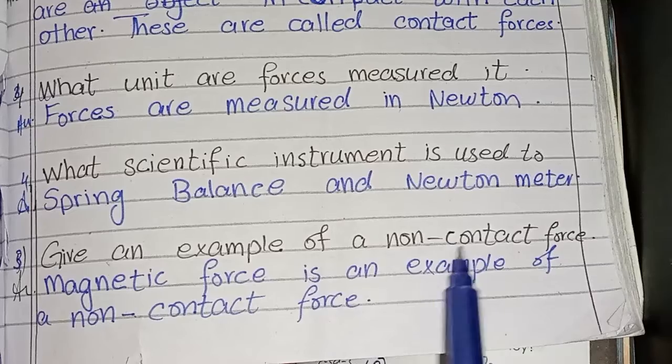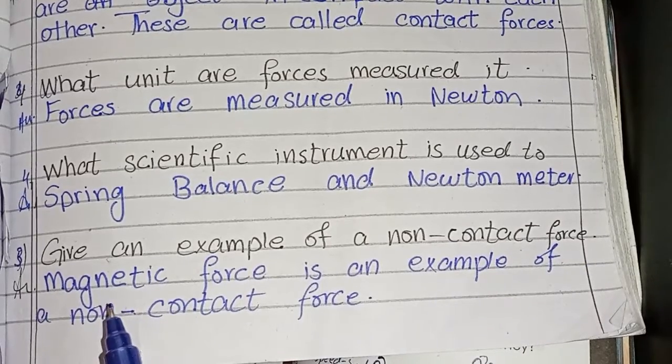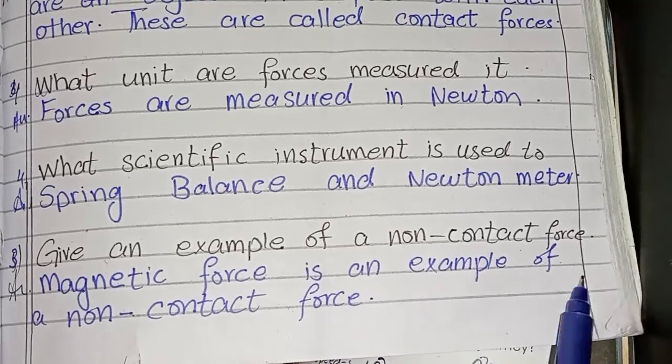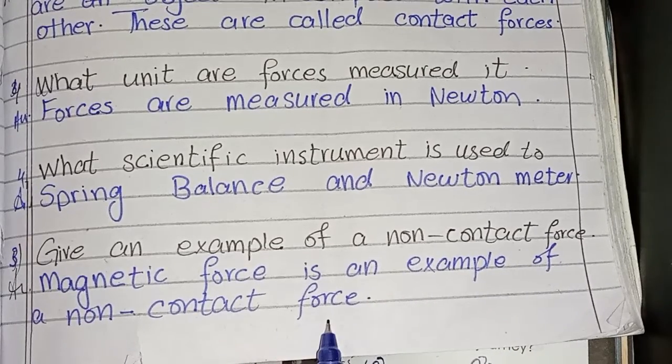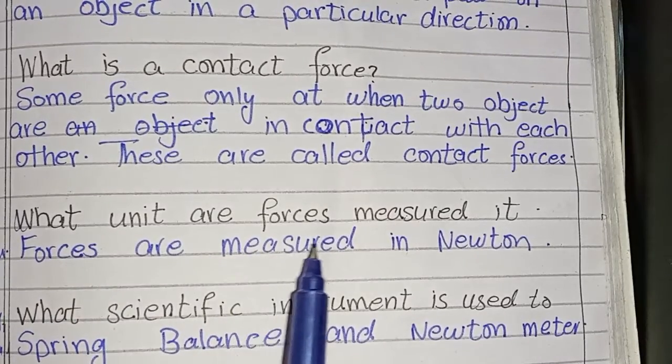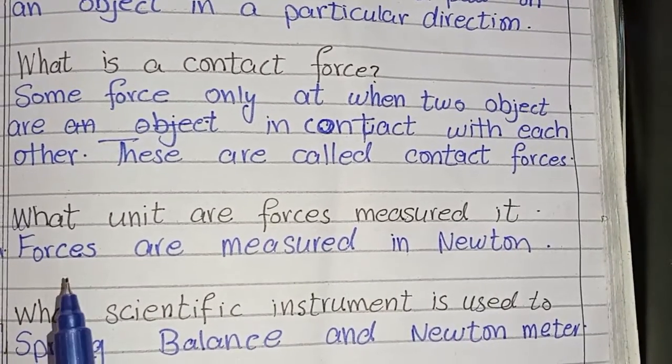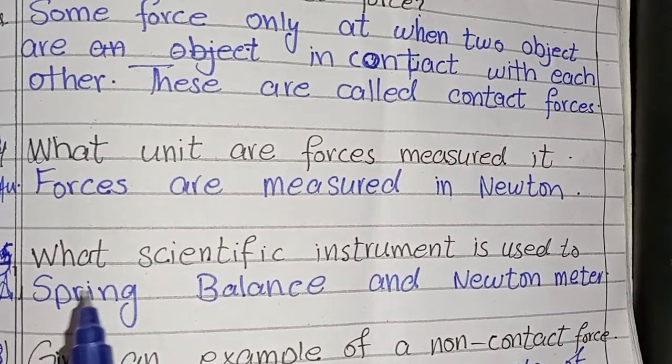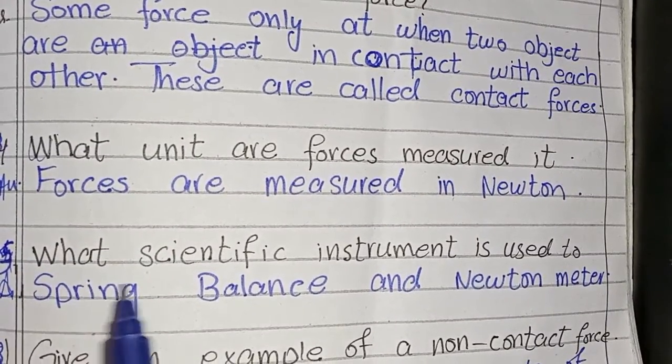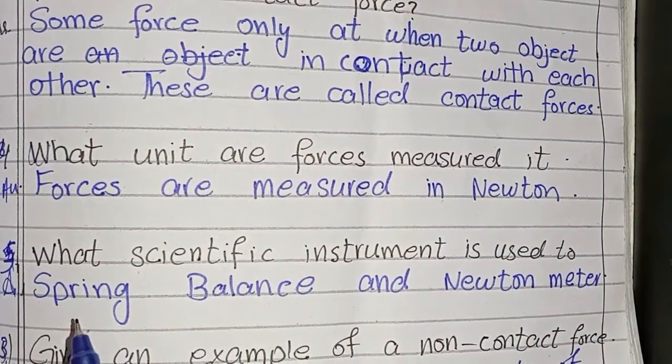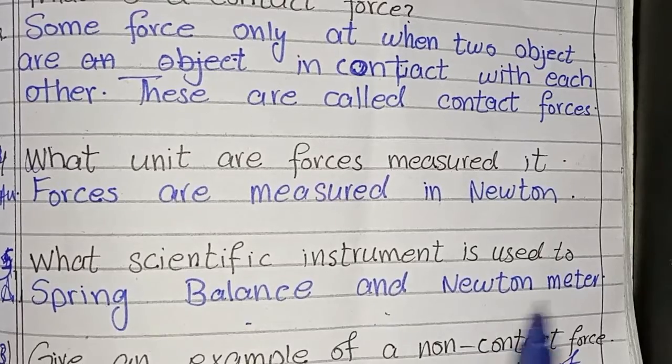Third question is: Give an example of a non-contact force. Answer: Magnetic force is an example of a non-contact force. Question number 4 is: What unit are forces measured? Forces are measured in Newton. Last question is: What scientific instrument is used? Spring balance and Newton meter.